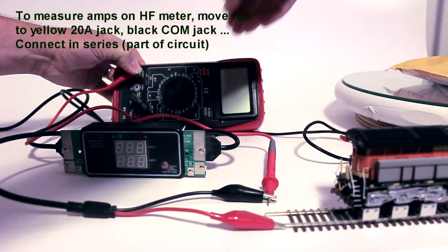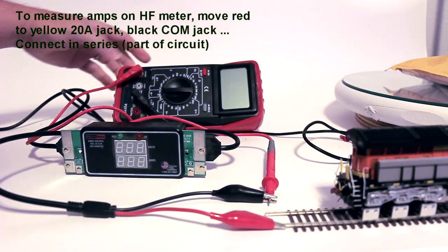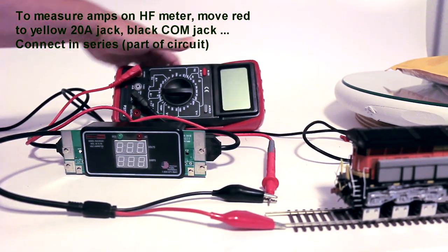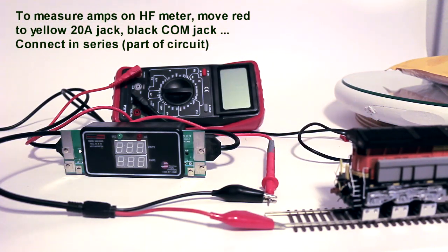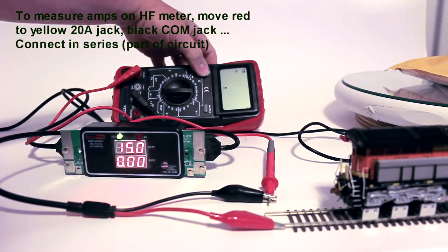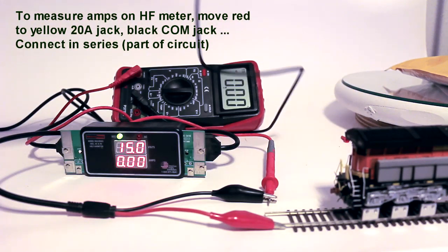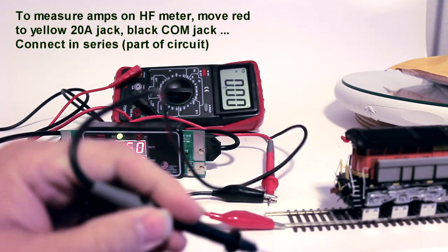Move up to the amp settings, move down to the 20 amp settings on the multimeter. See the voltage is back, turn the multimeter back on. No amps because nothing's currently flowing.